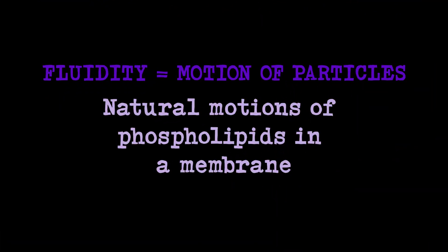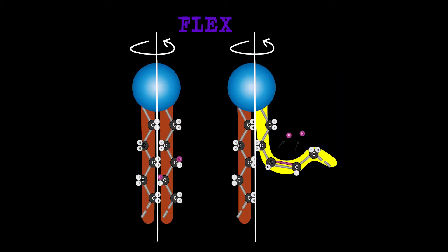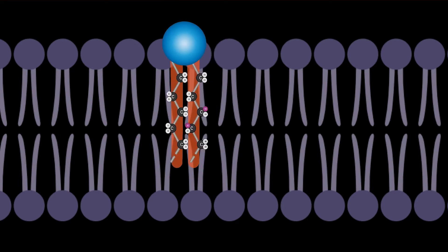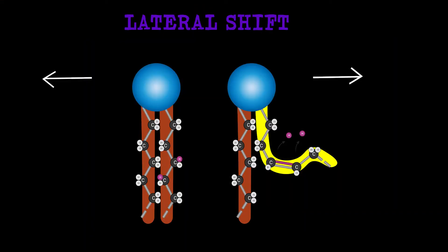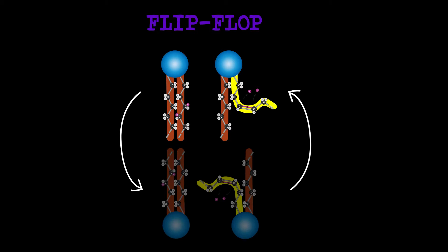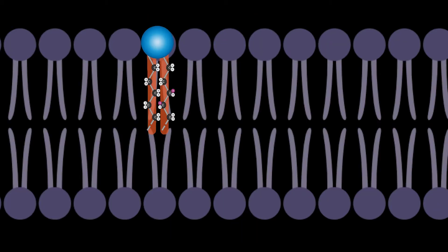Flex: when phospholipids rotate on themselves. This motion occurs more than a billion times every second. Lateral shift: this change of relative position occurs 1 million times every second. Finally, there is the flip-flop motion, where the phospholipid transfers into the other layer. This motion is not frequent, on average once a day.